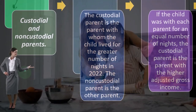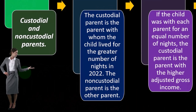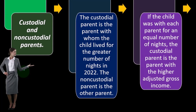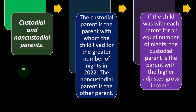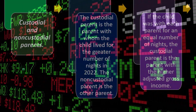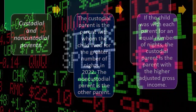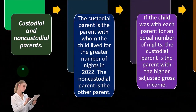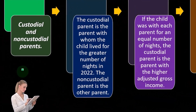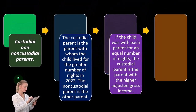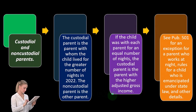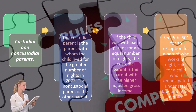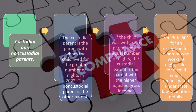So you can see how this gets kind of messy. If the child was with each parent for an equal number of nights, the custodial parent is the parent with the higher adjusted gross income. Some people kind of balk at this — why would that be? Well, if you split it evenly, as is often the case with a joint custody situation, they're going to say the custodial parent is the one with the higher adjusted gross income. The assumption being that you're taking care of them evenly, and the one with a higher adjusted gross income is probably meeting more of their support needs. See Publication 501 for an exception for the parent who works at night, rules for a child who is emancipated under state law, and other details.